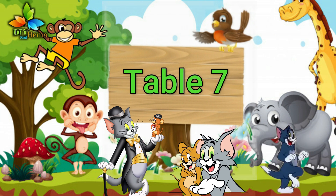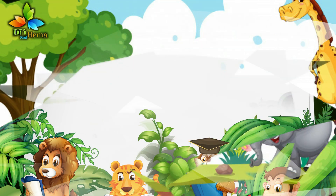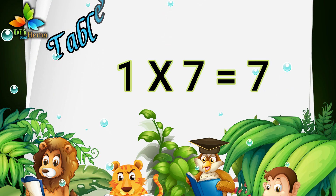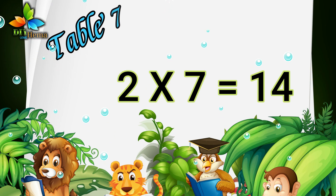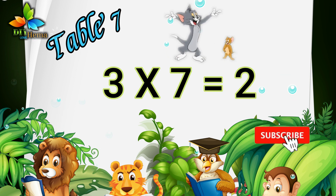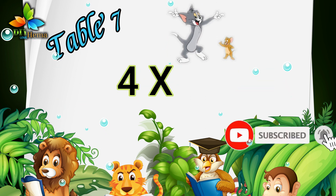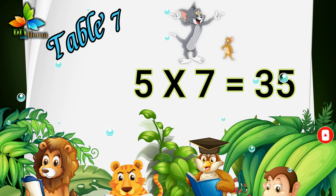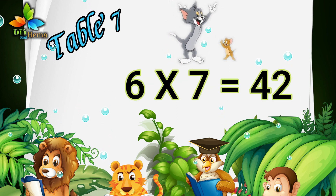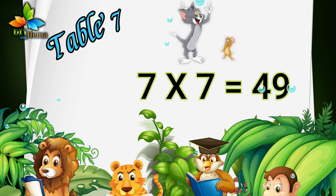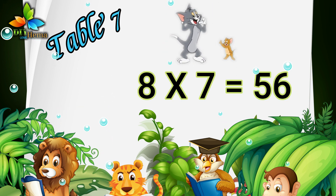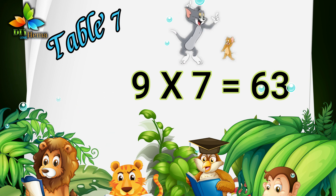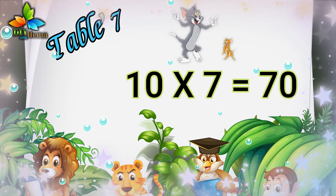Table seven. One, seven is seven. Two, sevens are fourteen. Three, sevens are twenty-one. Four, sevens are twenty-eight. Five, sevens are thirty-five. Six, sevens are forty-two. Seven, sevens are forty-nine. Eight, sevens are fifty-six. Nine, sevens are sixty-three. Ten, sevens are seventy.